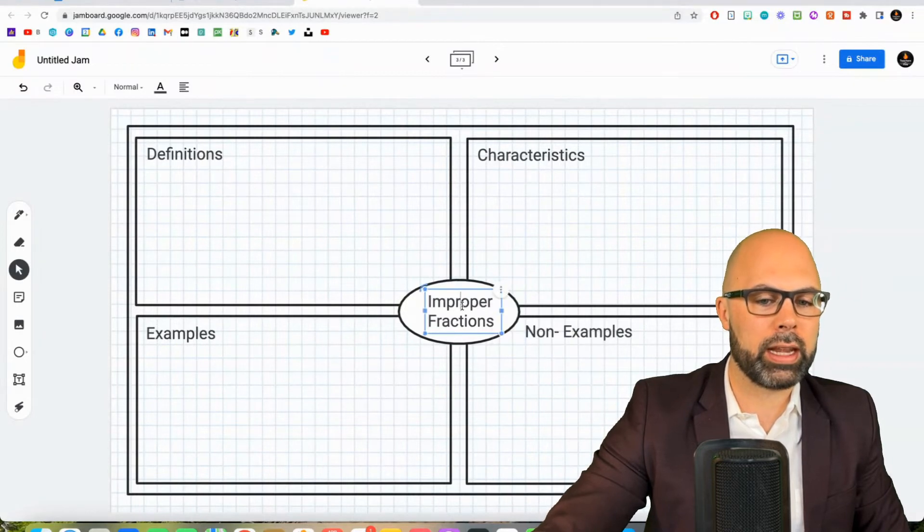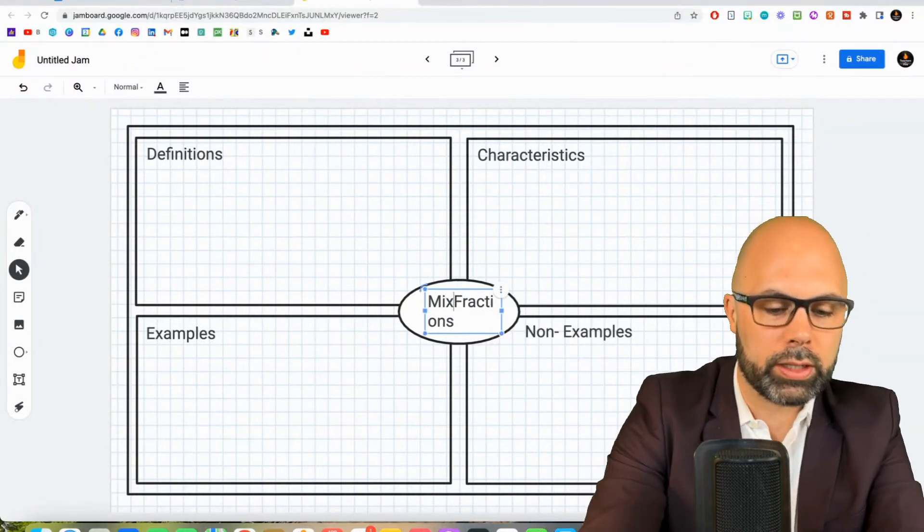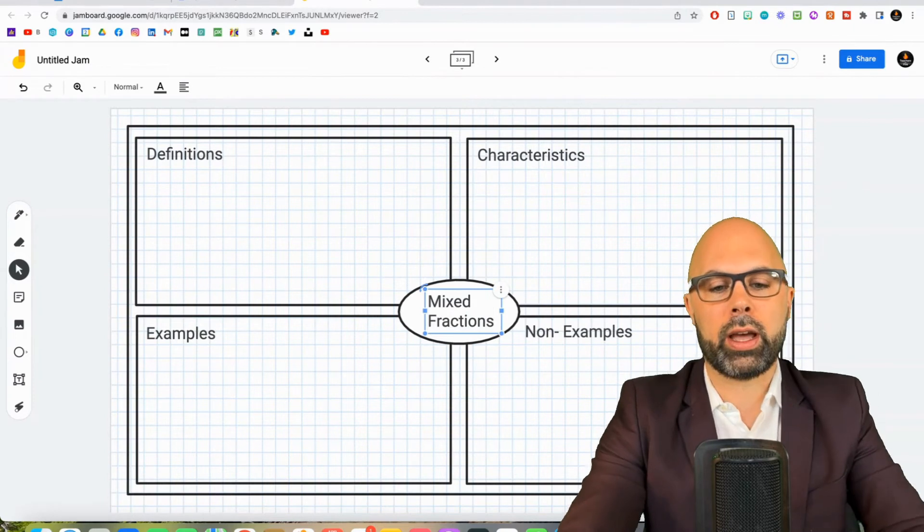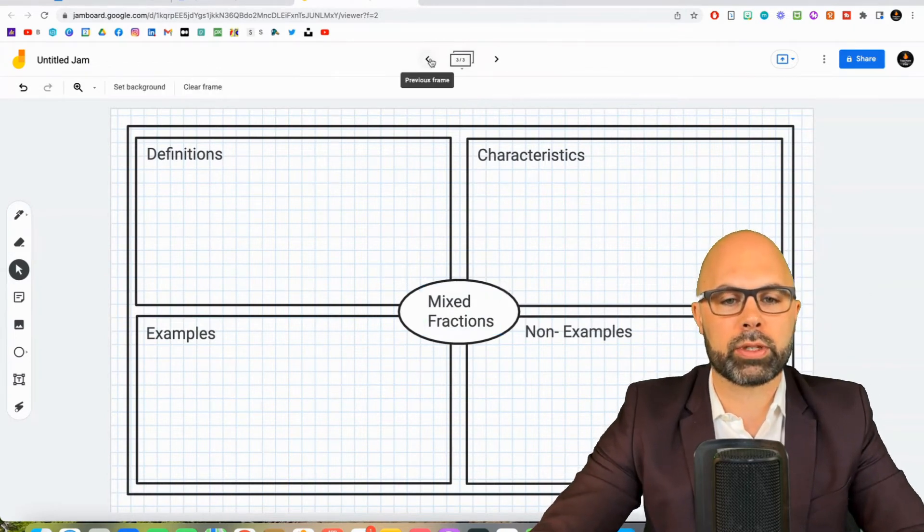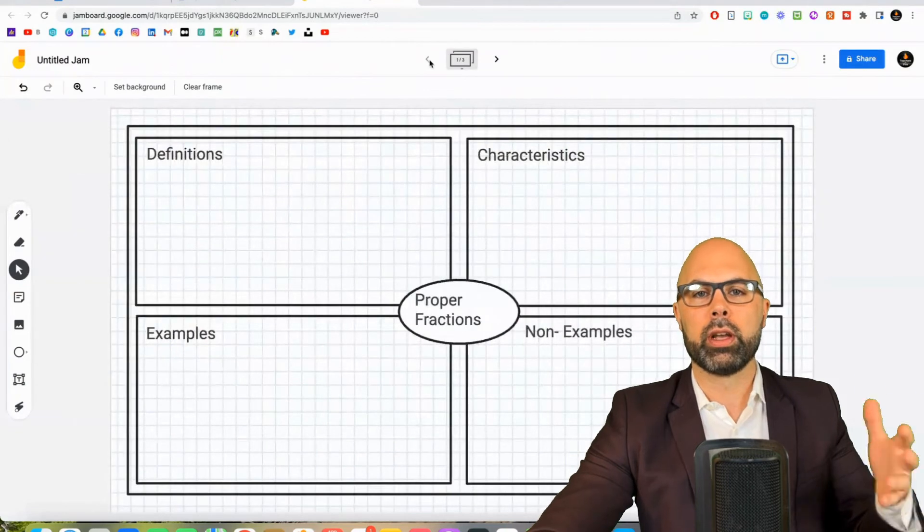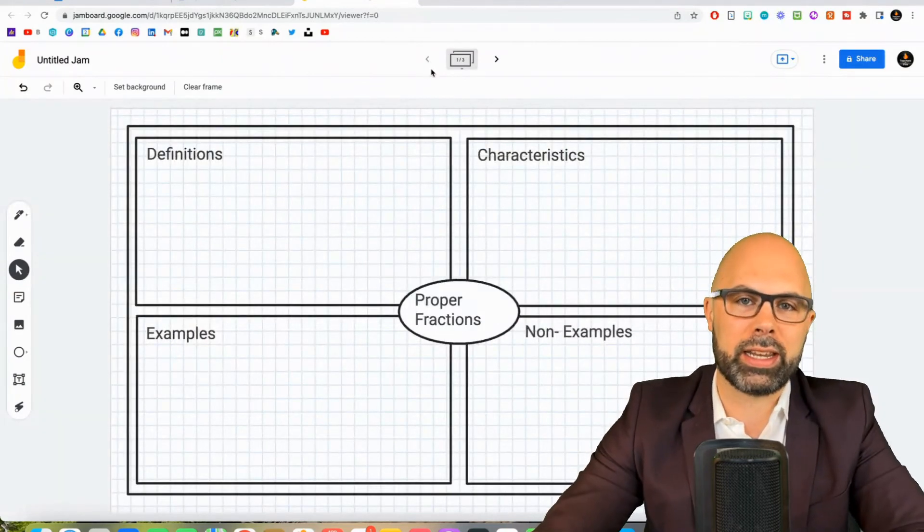And you see the idea. You can keep on going with any kind of template that you want and just make sure that you're not reproducing your efforts too many times. So duplicate is another great option for adding additional slides in Google Jamboard.